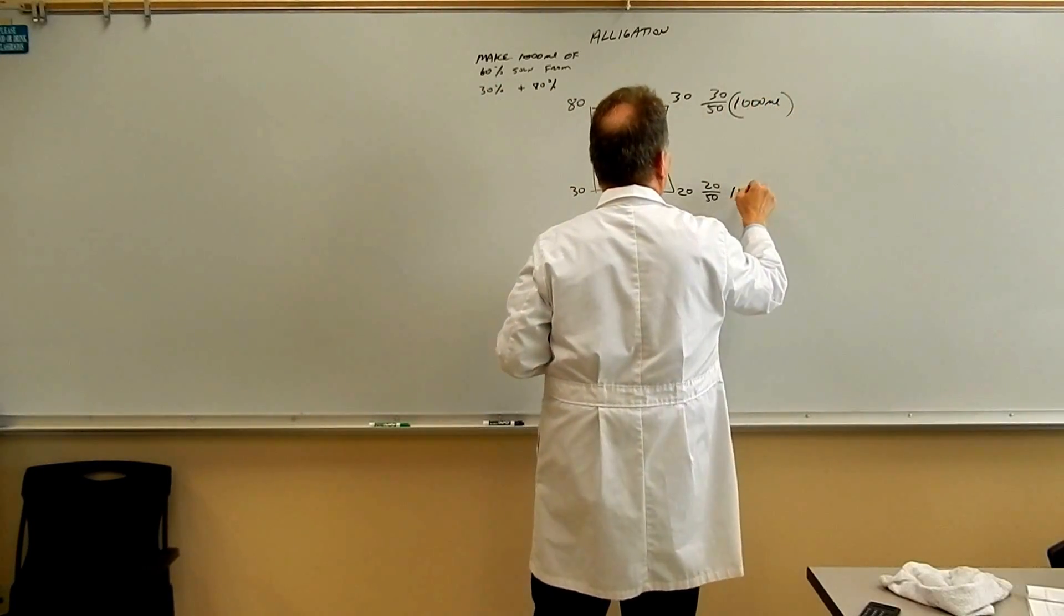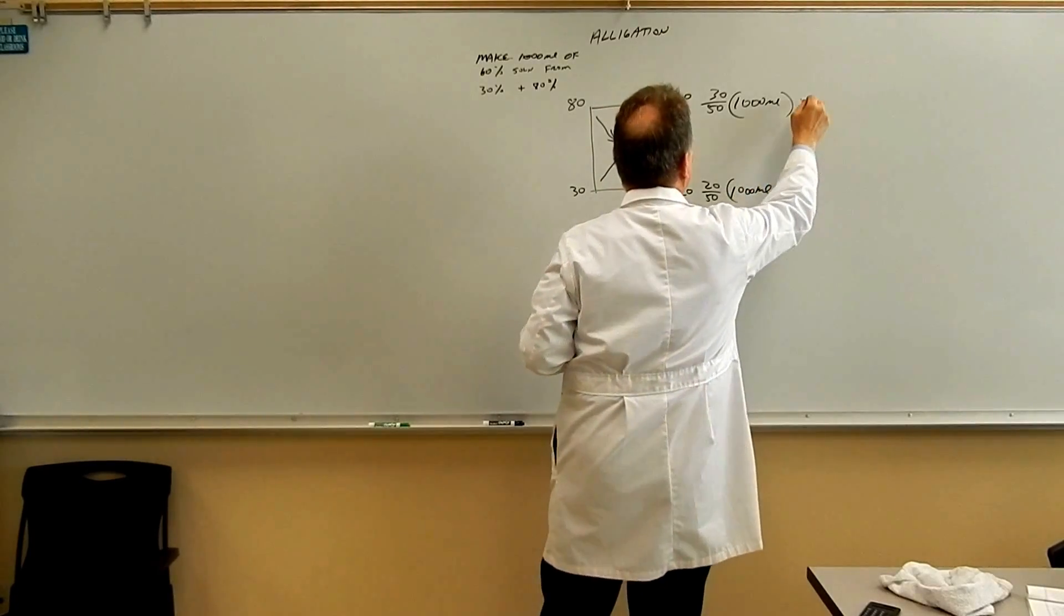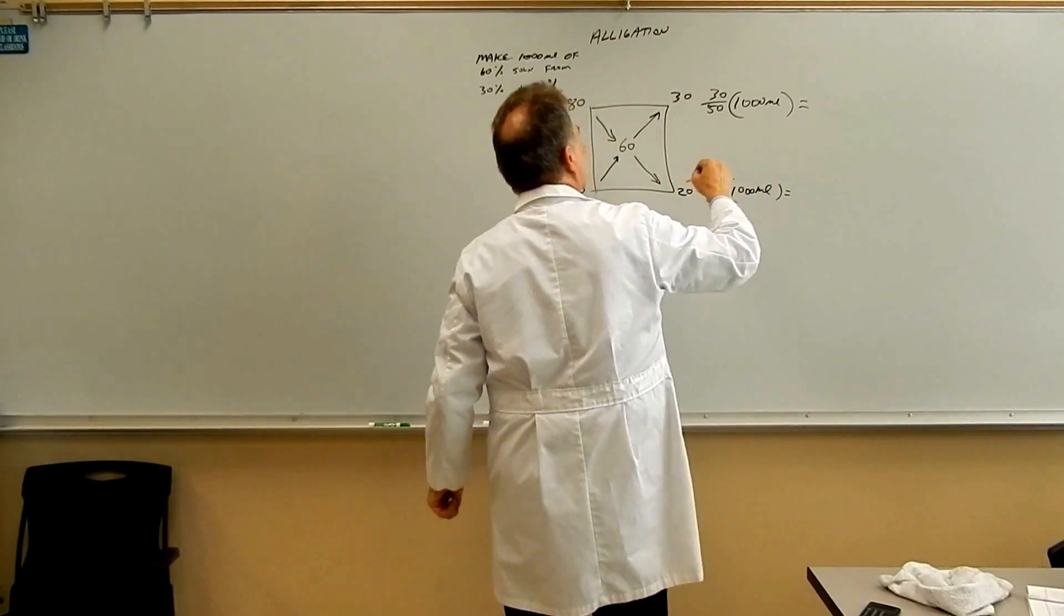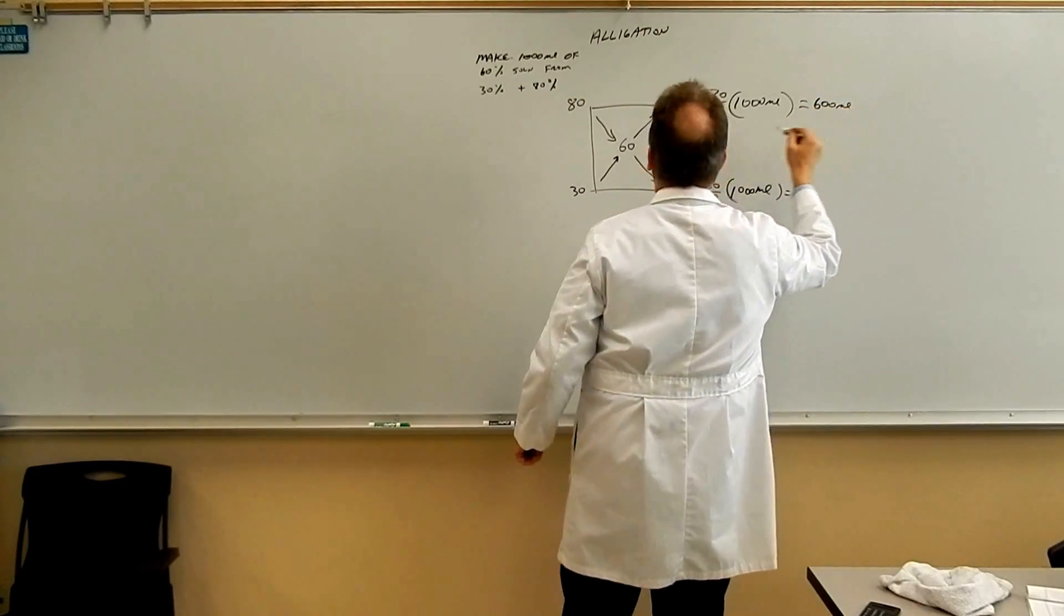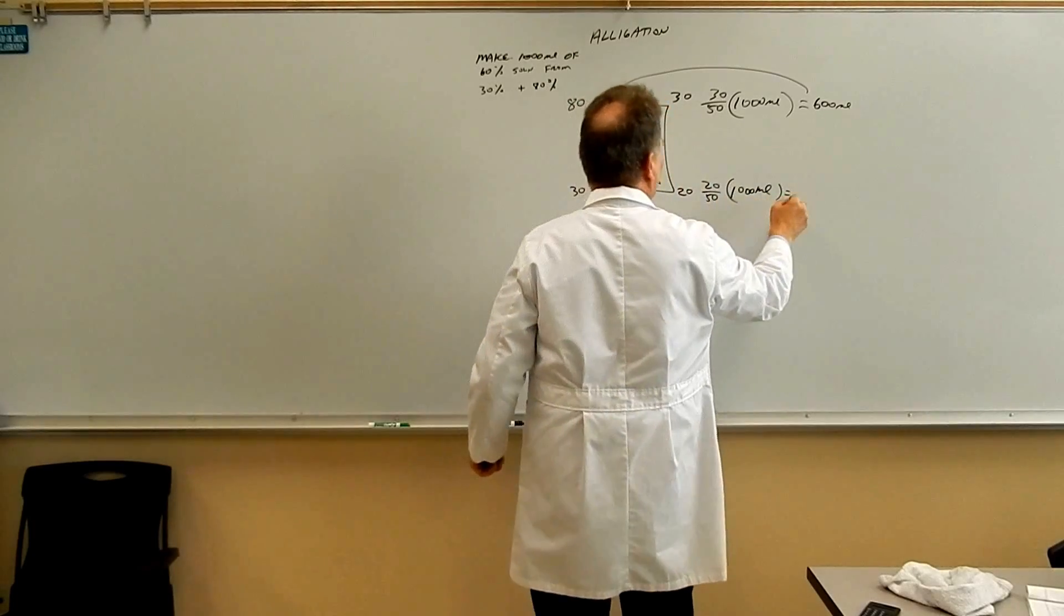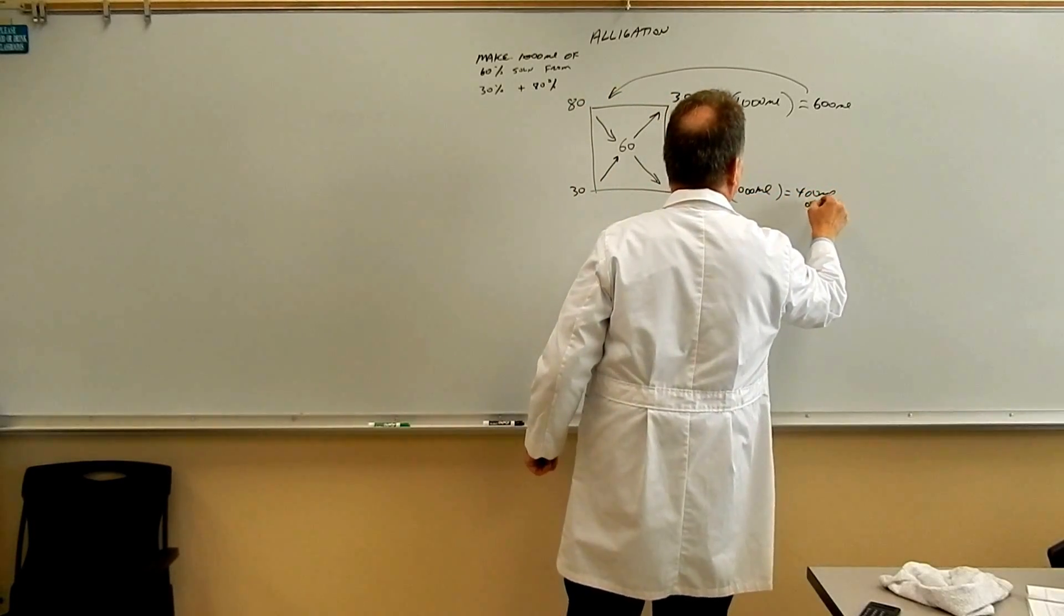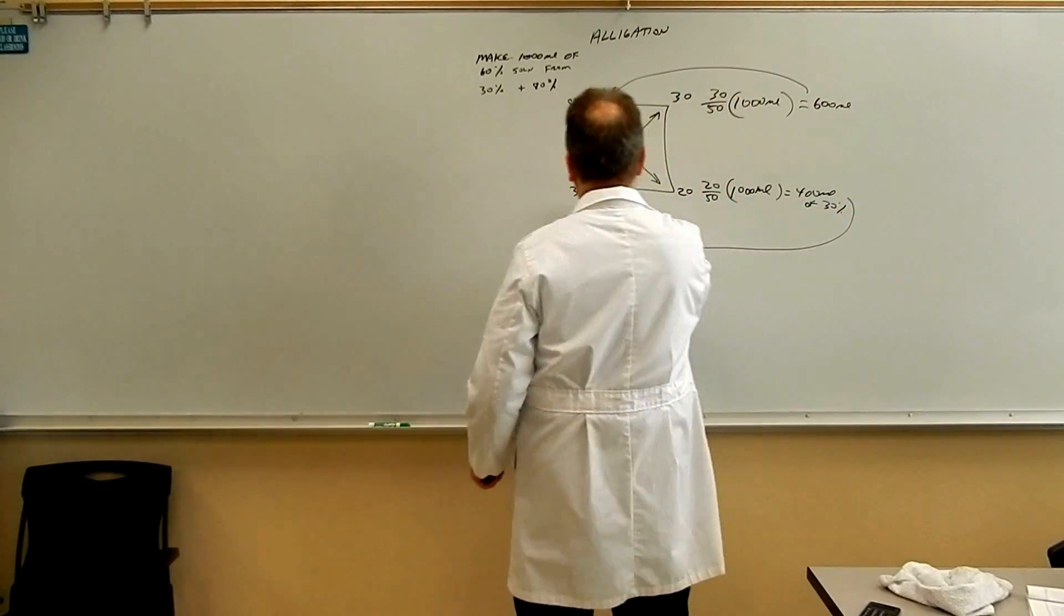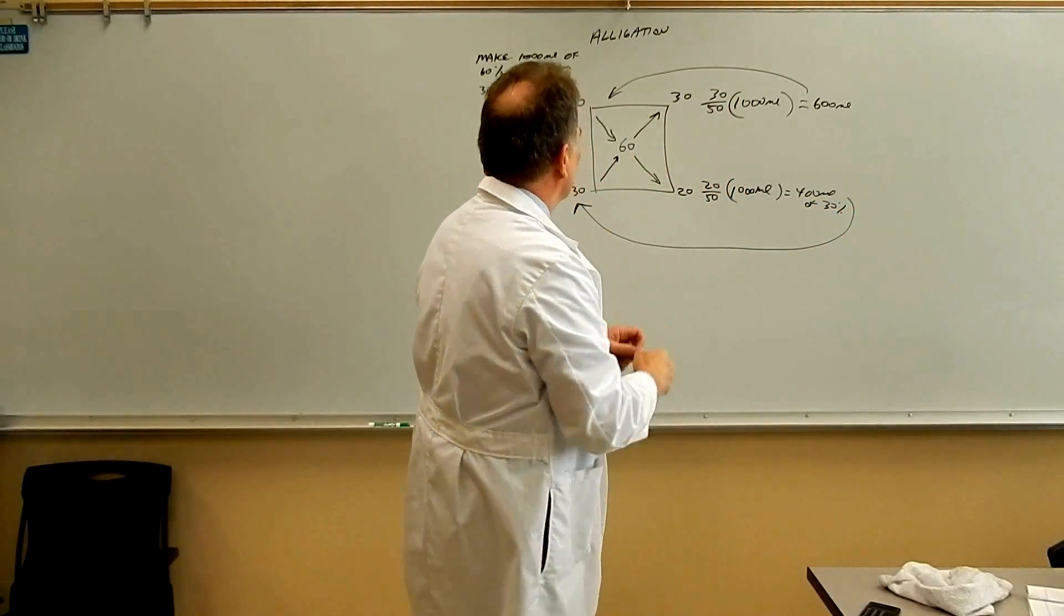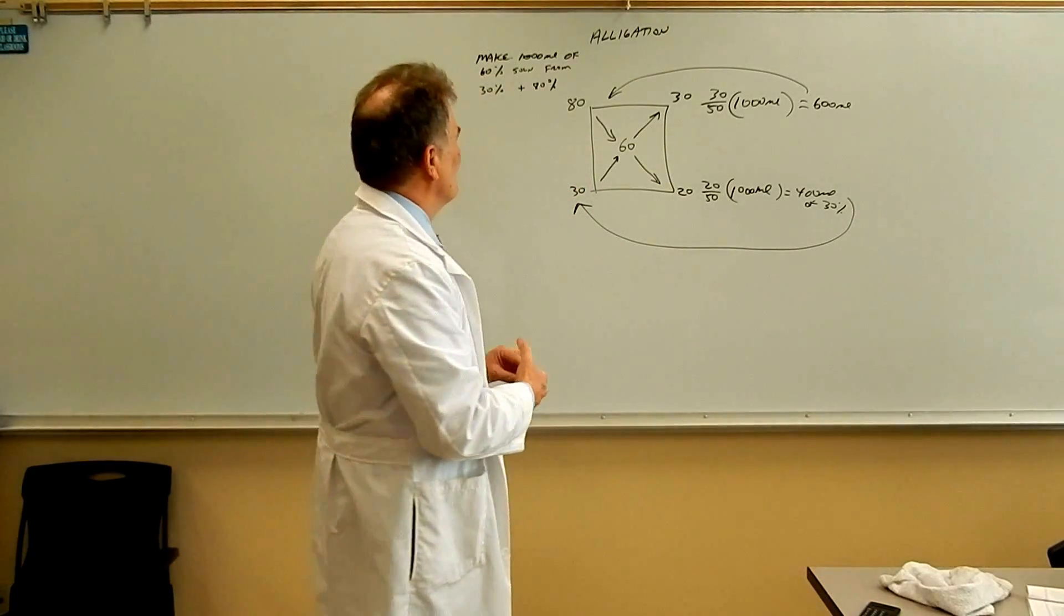What we do is multiply both of these things by a thousand mLs and that will give us 600 mLs of the 80% and 400 mLs of the 30%. So these are pretty easy. This is much easier than doing it the long mathematical way.